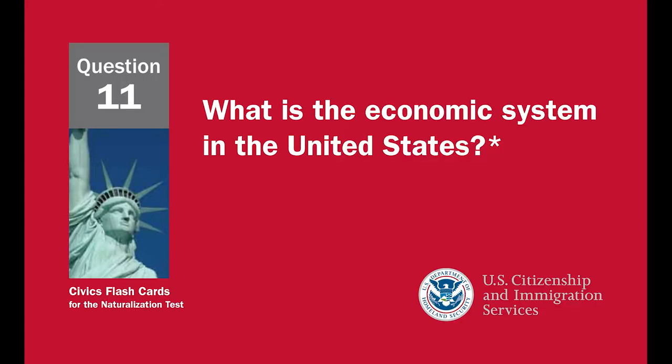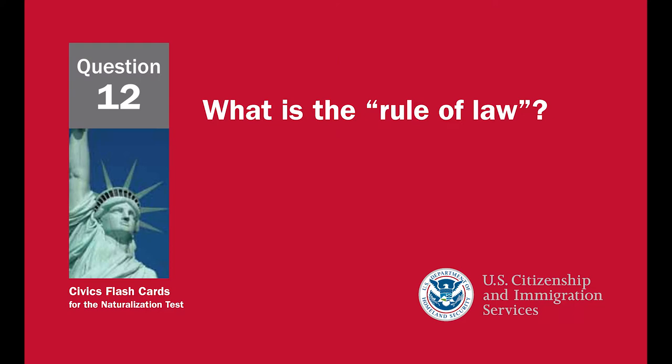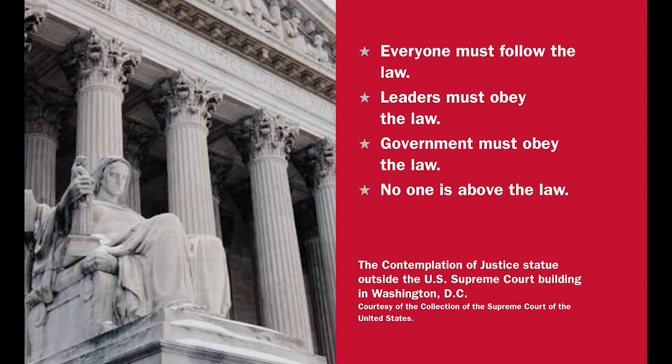What is the economic system in the United States? A capitalist economy, or market economy. What is the rule of law? Everyone must follow the law. Leaders must obey the law. Government must obey the law. No one is above the law.